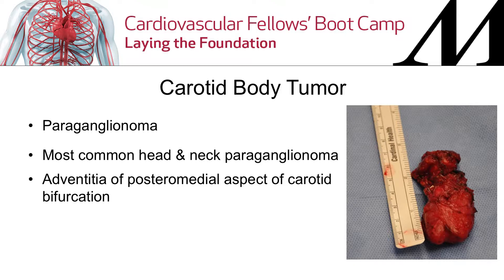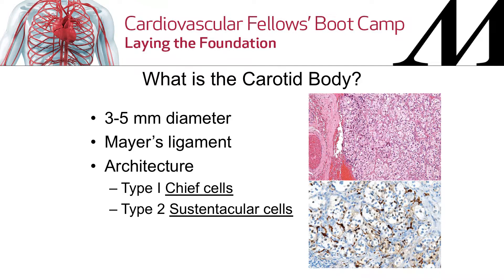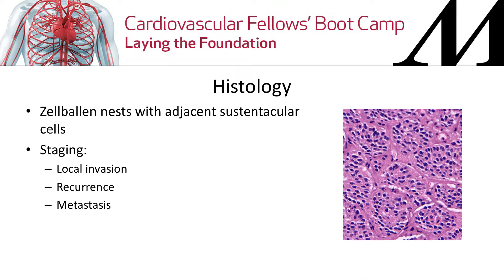The carotid body tumor is found at the carotid bifurcation, at the posterior medial aspect, because that's where the carotid body is. The carotid body is neural crest cell-derived, about 3 to 5 millimeters in diameter, normally attached to the bifurcation via the Mayer's ligament. There are two types of cells that make up the carotid body visible on histology: the chief cells, which are the neural crest cells, and the supporting sustentacular cells. They form little clumps with intervening vascular sinusoids.